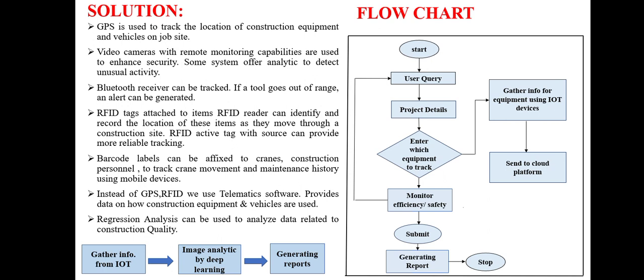If a tool gets out of range, an alert can be generated using a Bluetooth receiver. Image analytics is done by deep learning concepts like RNN and CNN. Barcodes are fixed into the crane machine to track crane movement and maintenance using mobile devices.